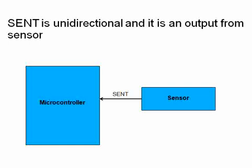An important point is that SENT is a unidirectional interface — it is output from the sensor. We can only get data from the sensor; we cannot configure or do anything with it. The sensor has to be pre-configured in the factory and then you just use it. That's one disadvantage — if you want to configure something or read data in different ways, that is not possible.